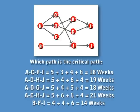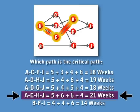So what that means is that our critical path is A, E, H, J, because it takes 21 weeks — that's the longest duration of any path in our project. These activities are not going to have any slack time on them, and that is the path that we're going to monitor through our project.